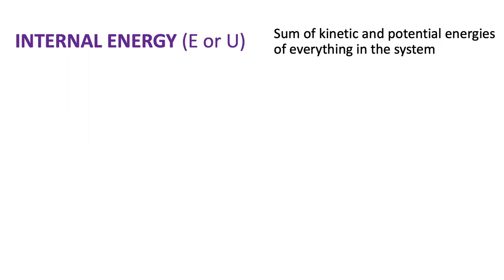Up till now we've been talking about kinetic and potential energies, but we're going to define a quantity called internal energy. We'll use E to represent this, though some books use U — U is used more often by physicists and E by chemists. Internal energy is basically any sort of energy found within a substance — all the kinetic energy and all the potential energy of everything.